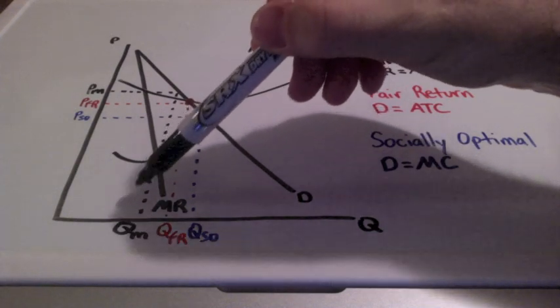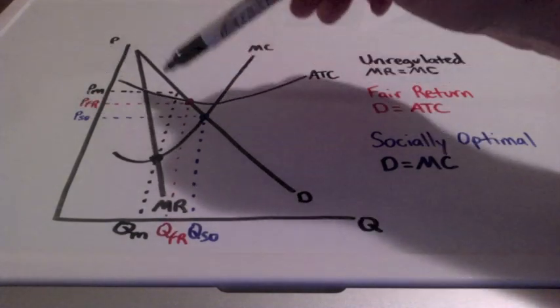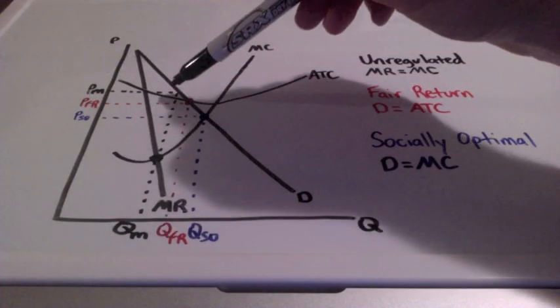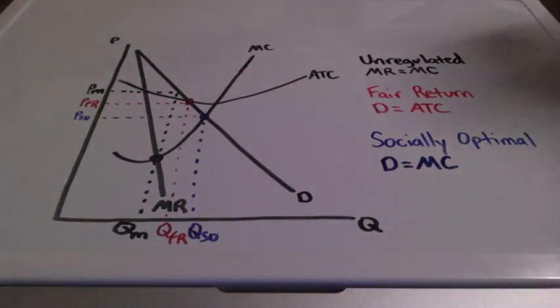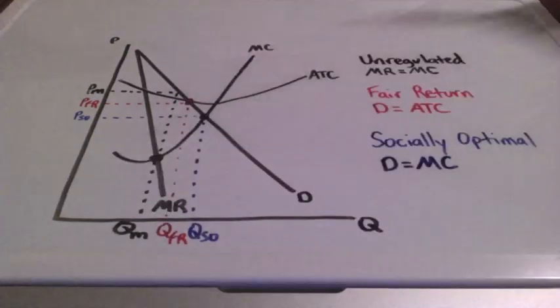This represents the profit maximizing quantity and the price for the monopoly. Let's say that the government would like the firm to produce more than QM. What could the government do?